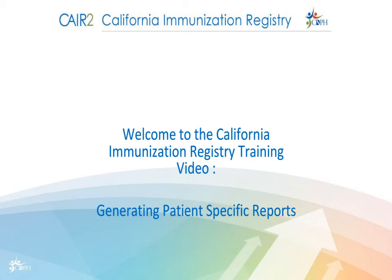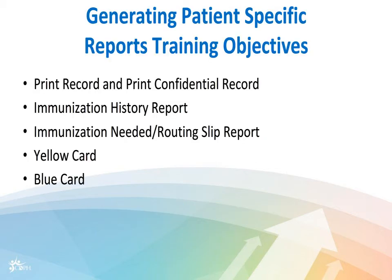Welcome to the California Immunization Registry training video: Generating Patient-Specific Reports. The training objectives and goals will be to print record and print confidential record, immunization history report, immunizations needed routing slip report, yellow card, and blue card.